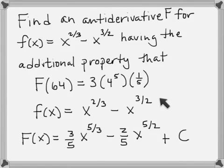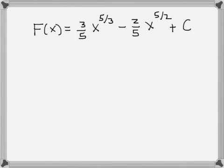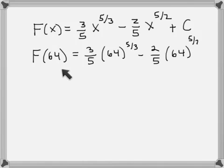But what we want is a particular antiderivative. When we plug in 64 into F, we want this specific value. So we're going to take the form we got for the most general antiderivative and plug in 64 for x. That's what we get when we do that.